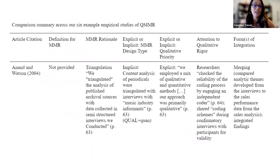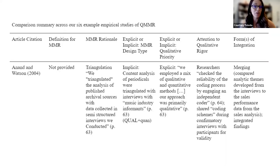On this next slide, you see a comparison — a snapshot of our comparison table, the rest of which is in the chapter. You can see we've looked at Anand and Watson, and the different ways that we compare the studies, including the definition. In this case, this study did not provide a definition for mixed methods research; however, they did provide a rationale for using it and had an implicit design type but an explicit qualitative priority. You can see a few of the different ways these particular researchers approached the study, and you'll get to see more of that in the chapter.